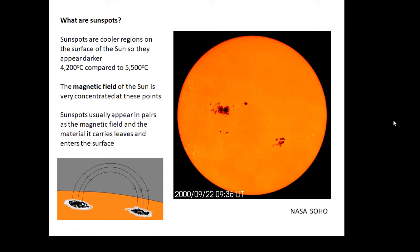They're caused by the magnetic field of the sun. The magnetic field of the sun on the surface bursts out in loops. It comes out of the sun, goes back into the sun, and where it comes out and goes back in, that's where you get sunspots. And that's why sunspots usually appear in pairs as the magnetic field and the material that it carries leaves and enters the surface.